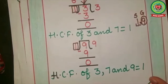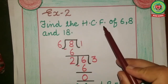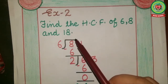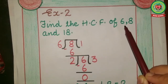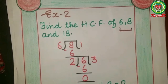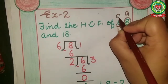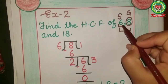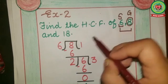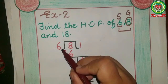Let's take one more example to understand it properly. Example number two: find the HCF of 6, 8, and 18. Again I am having three numbers, so for finding the HCF of three numbers, firstly I will find the HCF of two numbers. In between 6 and 8, which number is greater? Yes, 8 is greater and 6 is smaller. So the smaller number, 6, will become the divisor and the greater number, 8, will become the dividend. 6 will come outside the divide sign and 8 will come inside.